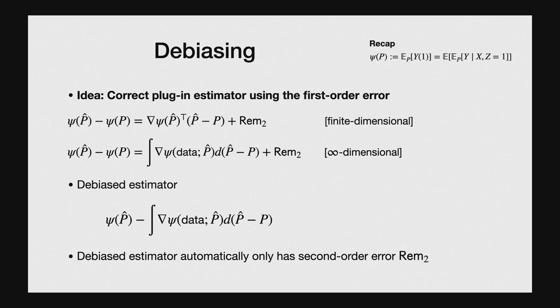The underlying quantity is a probability measure — an infinite-dimensional object — so you can use functional analytic tools to write this as an integral. The nice thing about the first-order Taylor expansion is that the first term quantifies the first-order statistical error of the plug-in estimator. If I can estimate this using my data, I can explicitly correct my plug-in estimator. This is called a debiased estimator, and by definition it enjoys second-order error rates.